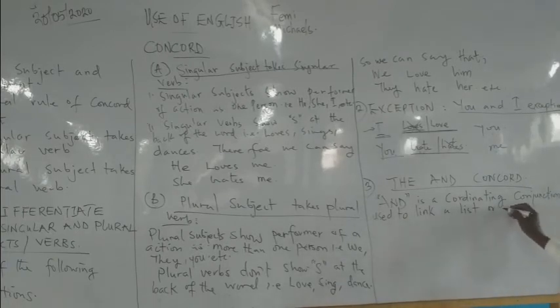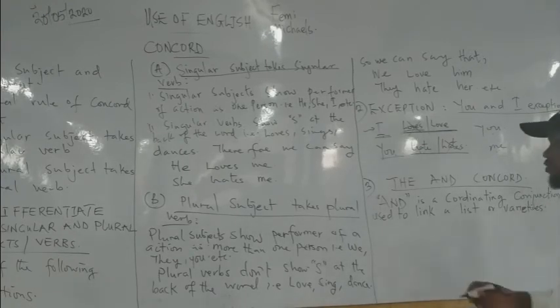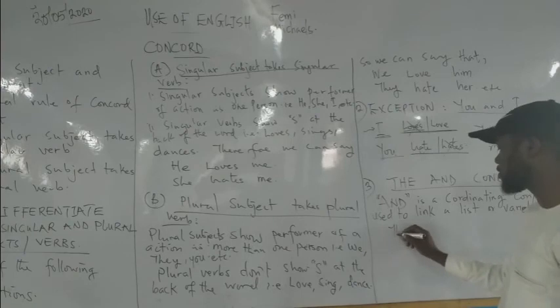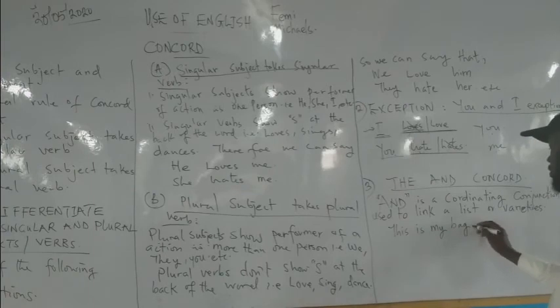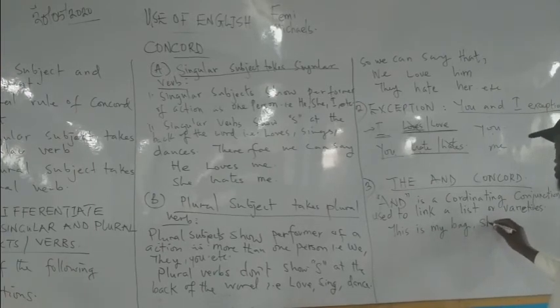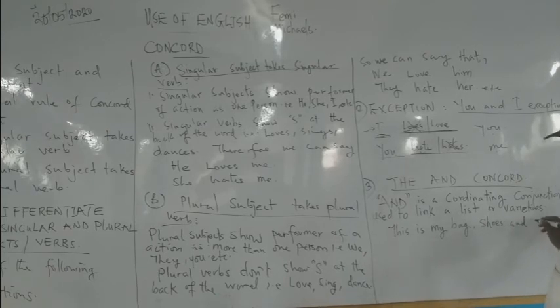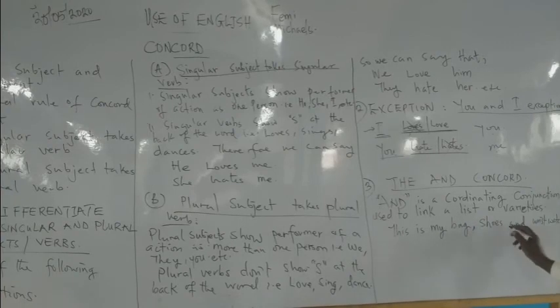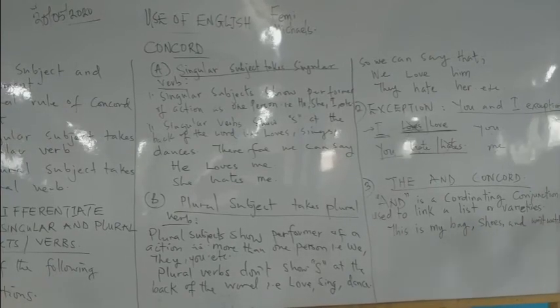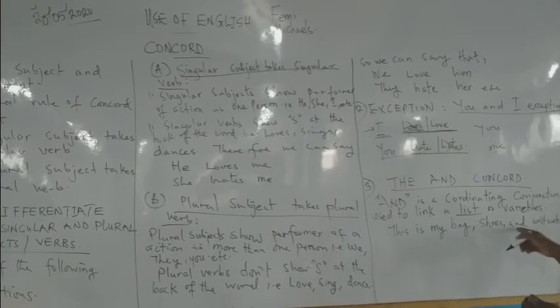For instance: 'This is my bag, shoes, and wristwatch.' There are items one, two, three — a list. We can use AND to join that list. But in the sense of concord, we are using AND to look at how two subjects are linked together to determine which verb to pick.